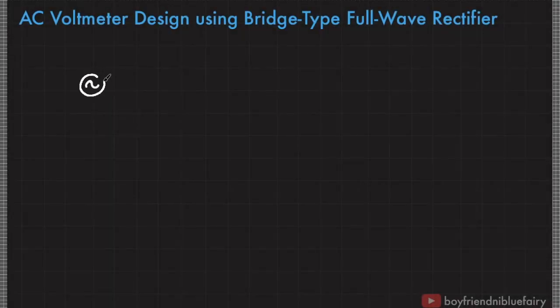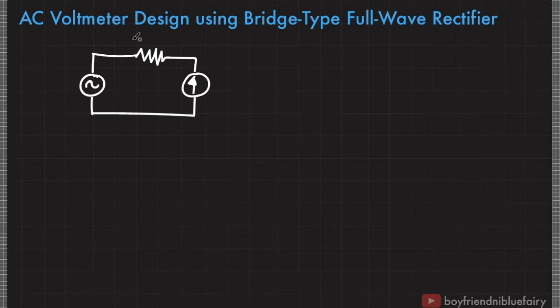If we have an AC source and this is our galvanometer, in order for this galvanometer to function as a voltmeter, we must add a multiplier resistance so that the galvanometer will not significantly introduce a voltage drop to our test component like the AC source.